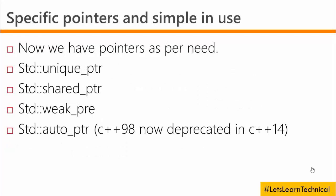Now, the third point: we have specific smart pointers, each simple in use. We have three types of pointers for specific purposes, and we will cover each in detail. The first pointer is the unique pointer, the second is the shared pointer, and the third is the weak pointer.